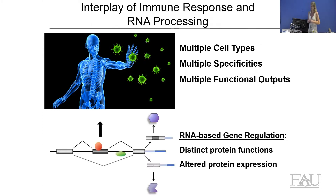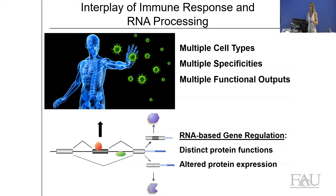One mechanism by which cells achieve this is through RNA-based gene regulation. RNA-based gene regulation has the potential to expand our coding capacity — taking a relatively limited number of genes and expanding to many distinct protein functions — as well as controlling and altering protein expression in response to different needs. Depending on the stimulus, a cell may need a different type of protein expressed.